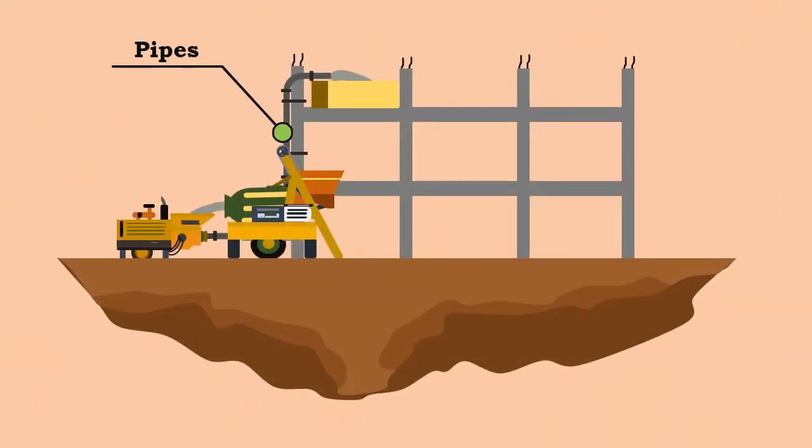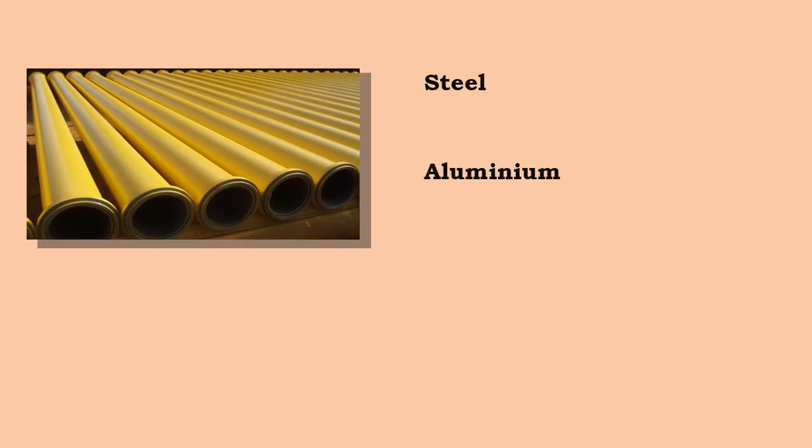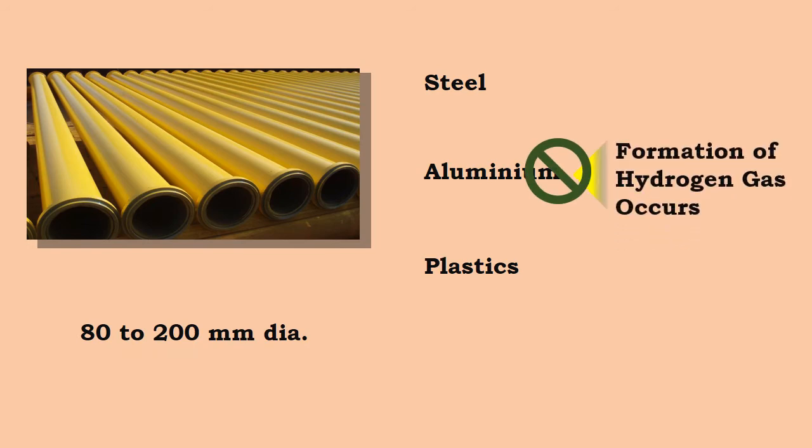The pipes attached to the valves are made of steel, aluminum, or plastics, which vary in sizes ranging from 80 to 200 millimeters diameter. The usage of aluminum pipes should be avoided as the formation of hydrogen gas occurs.